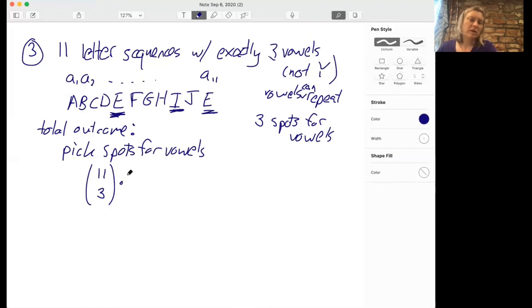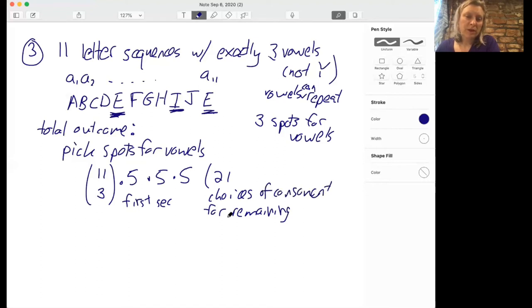So once we do that, then we see, once we've picked these spots for the vowels, there are then five choices for the first, which in our case was E, five choices for the second, which in our case was I, and five choices for the third. And then there are eight spots left, and for each of them we have 21 choices for the remaining eight spots. So these are the choices of the consonant for the remaining eight spots. So we got 21 to the eighth.